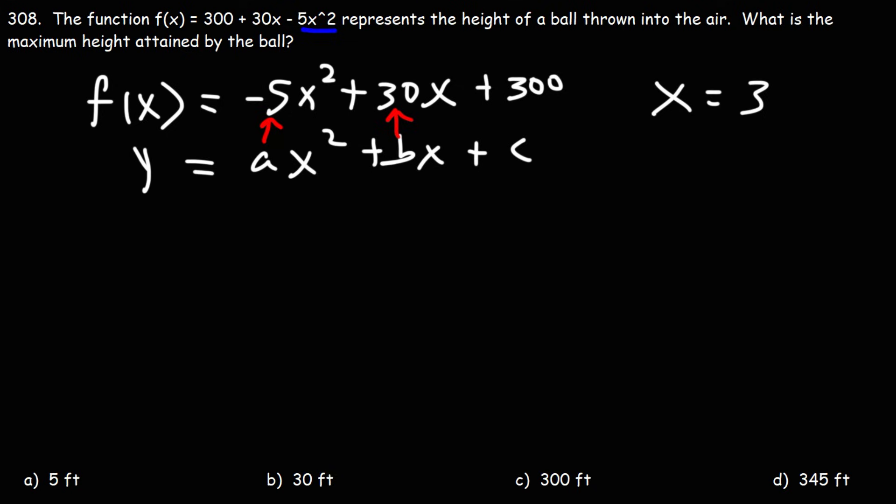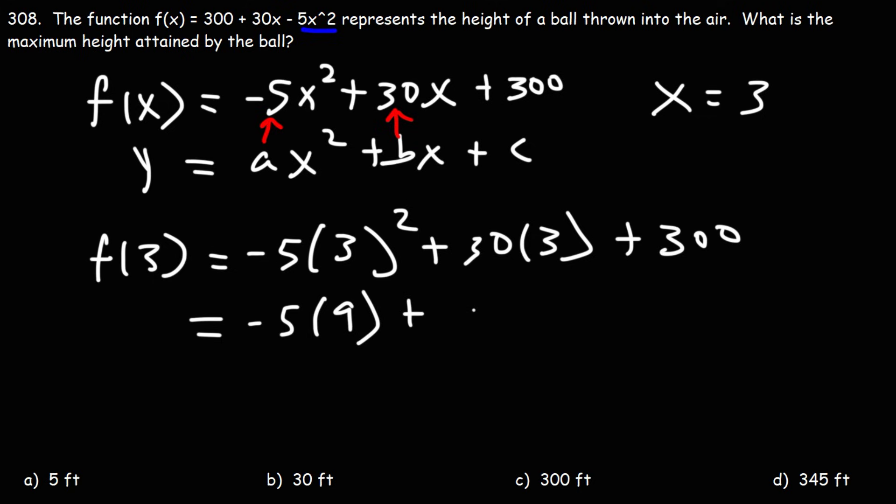Now, to find the value of the maximum height, we need to find the y-value, or evaluate the function when x is 3. This is going to be negative 5 times 3 squared plus 30 times 3 plus 300. 3 squared, 3 times 3 is 9, 30 times 3 is 90, and 5 times 9 is 45, but that's going to be negative 45. Negative 45 plus 90 is positive 45. 45 plus 300 is 345.